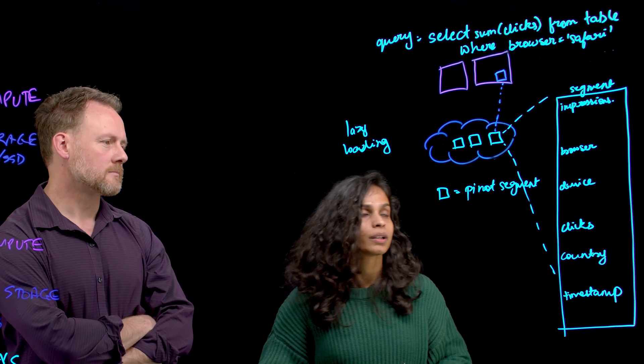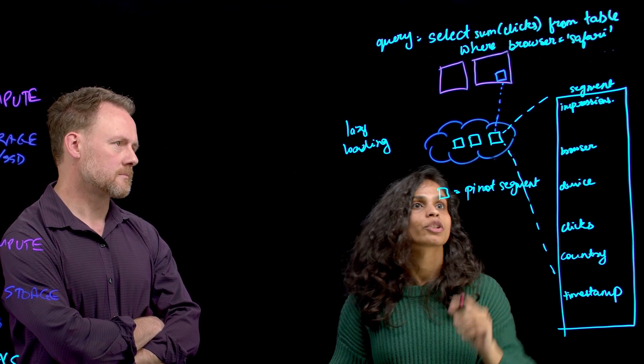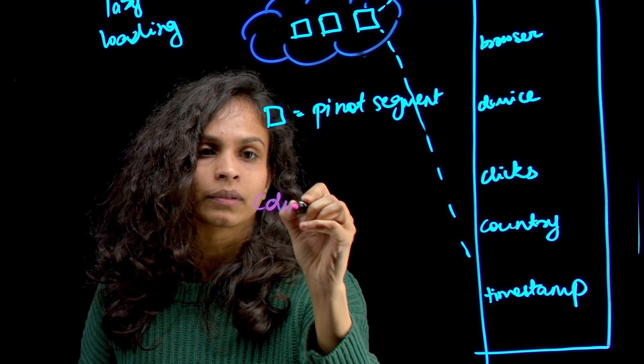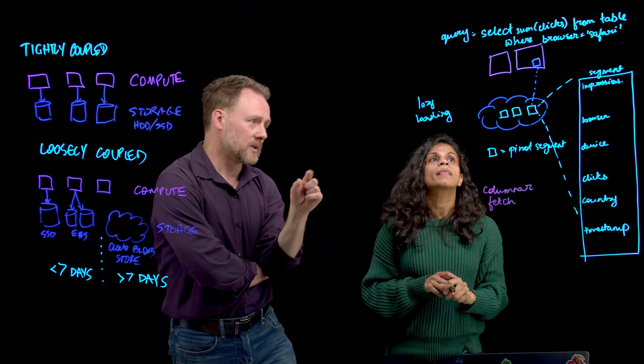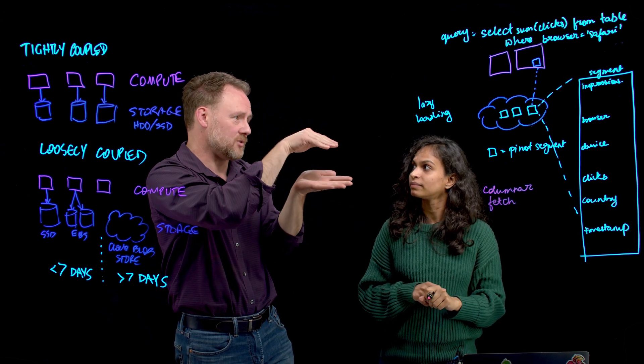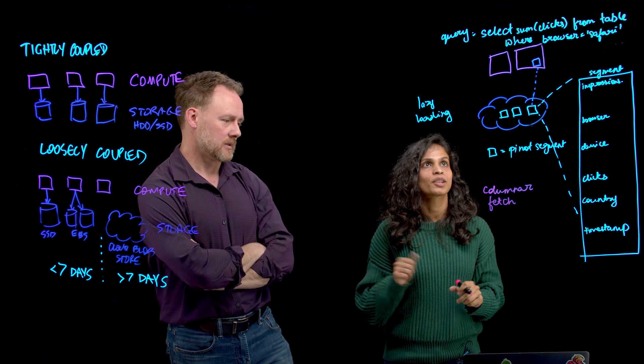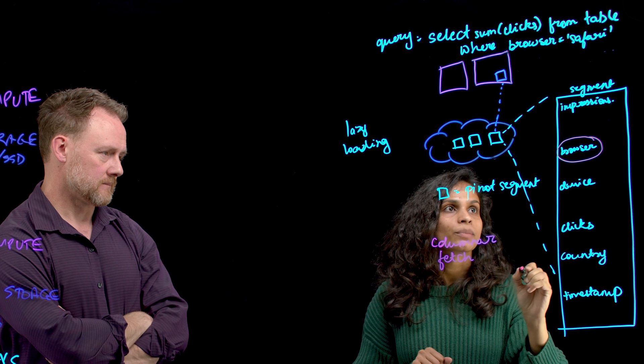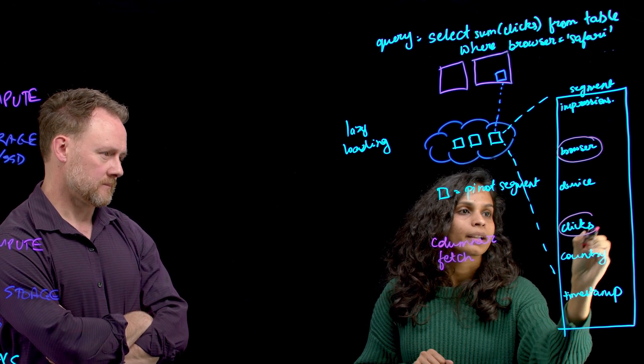What we do in Pinot, instead, is that based on the query, we will do a columnar fetch. So the server, the compute node, knows the structure of the segment and is able to get just a piece of it, not the whole blob. So now based on this query, all we will fetch is the columns that we have for browser and for clicks.